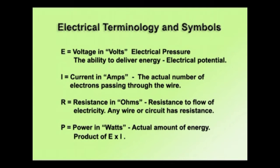Any wire or circuit has some resistance to the flow of electricity. And last is P for power, and that's in watts. You'll also see it sometimes rated as W. It's the actual amount of energy delivered, and it's always gotten by multiplying the voltage times the current.